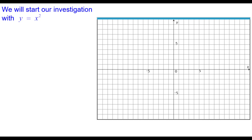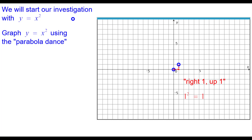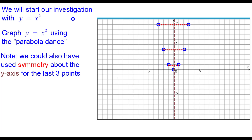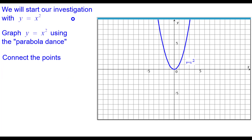We will start our investigation with the squaring function y equals x squared. We are going to graph it using the parabola dance. Please do that right now and press pause until you are finished. So 0 squared equals 0, that is the vertex. From there, right 1 up 1, right 2 up 4, right 3 up 9, and on the other side left 1 up 1, left 2 up 4, left 3 up 9. We could also use symmetry about the y-axis to get those last three points. Connect the points and there is our parabola.